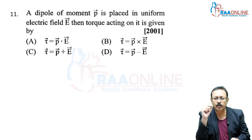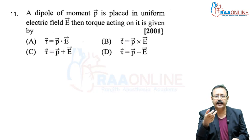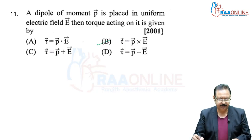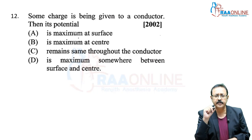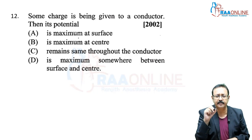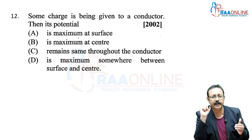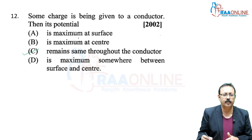Next, from 2001 AIPMT: a dipole moment P is placed in a uniform electric field E. The torque acting on it is given by P E sinθ, or in vector form P × E. Answer is option B. Next, from 2002 AIPMT: some charge is given to a conductor. Its potential is maximum at the surface, maximum at center, or remains the same throughout. The potential on the surface equals the potential inside at every point, so it remains the same throughout the conductor. Answer is option C.